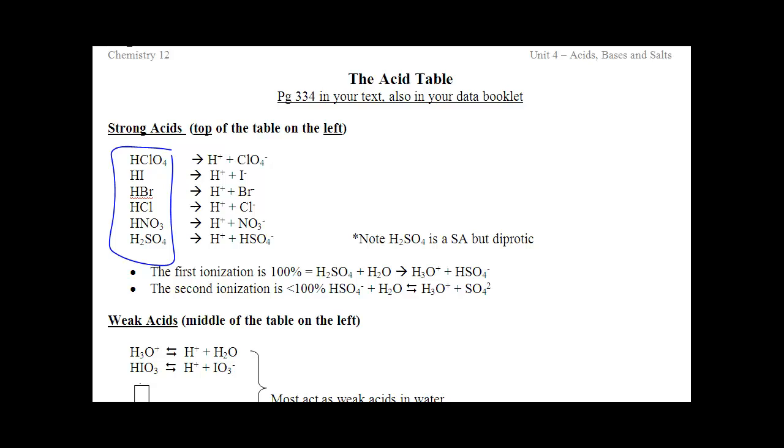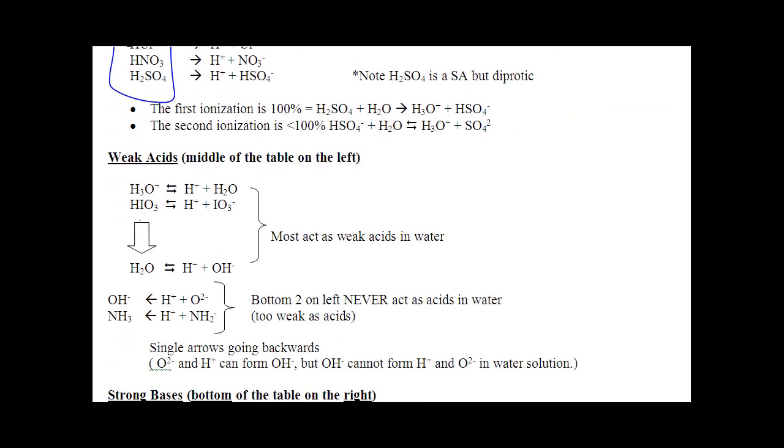These are your strong acids. These ionize 100%. Notice how they all got single arrows in our notes and they got single arrows in your data table. Underneath those top six are your weak acids. Notice how they all have double arrows.